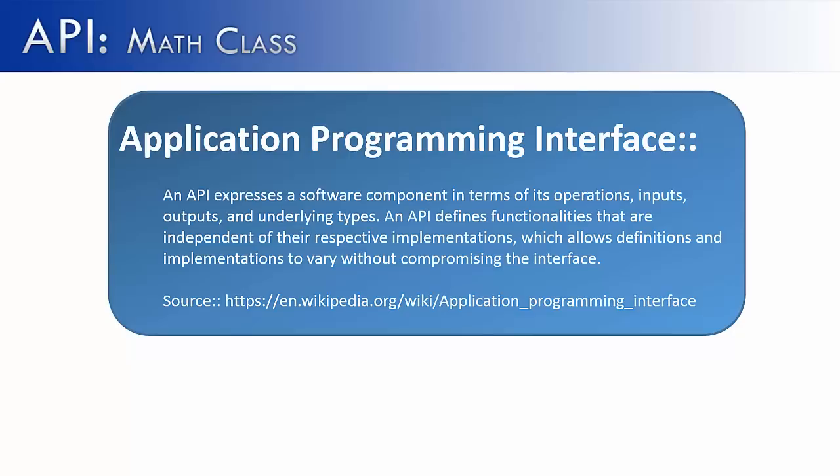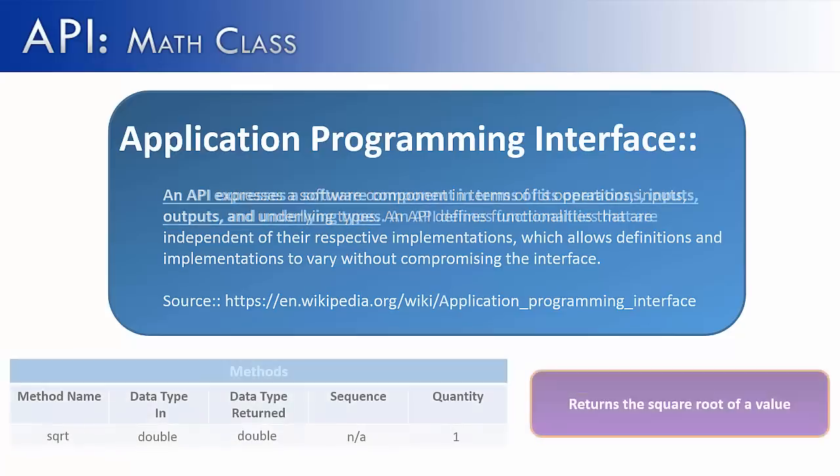Because the API explains all of those things to you, so that you know exactly how a method works, or even how a data value works within a class. So let's look at the definition of an API. The first part says, an API expresses a software component in terms of its operation, input, output, and underlying types.